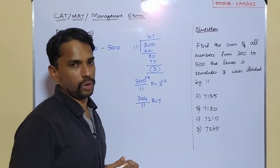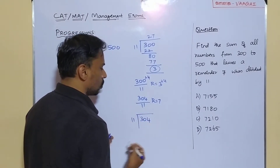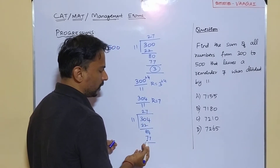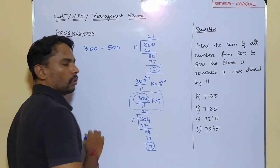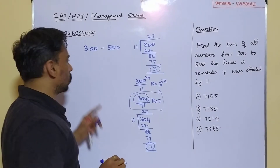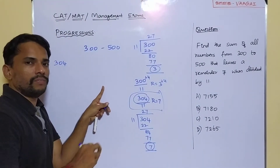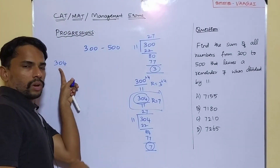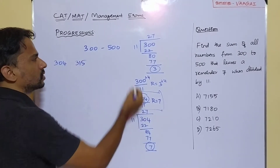Dividing 304 by 11: 11 times 2 is 22, balance 84; 11 times 7 is 77; 84 minus 77 gives remainder 7. So 304 is confirmed as our first number. The next number satisfying the condition will be 304 plus 11, which is 315, because adding 11 keeps the same remainder when dividing by 11.